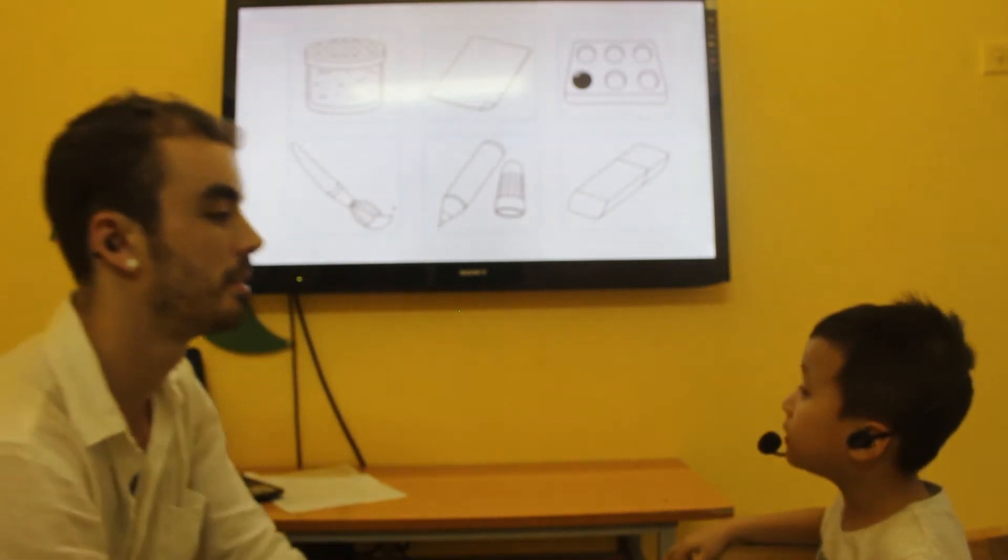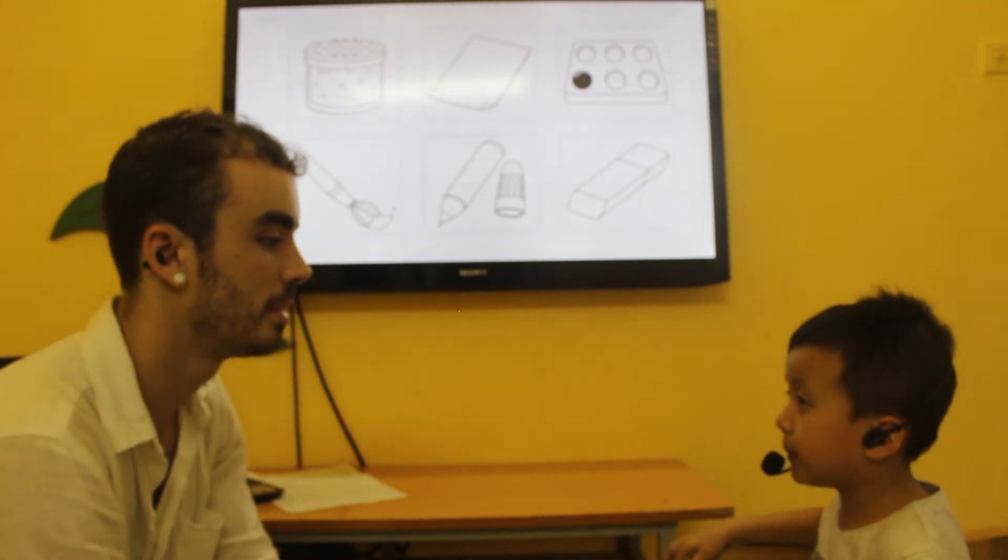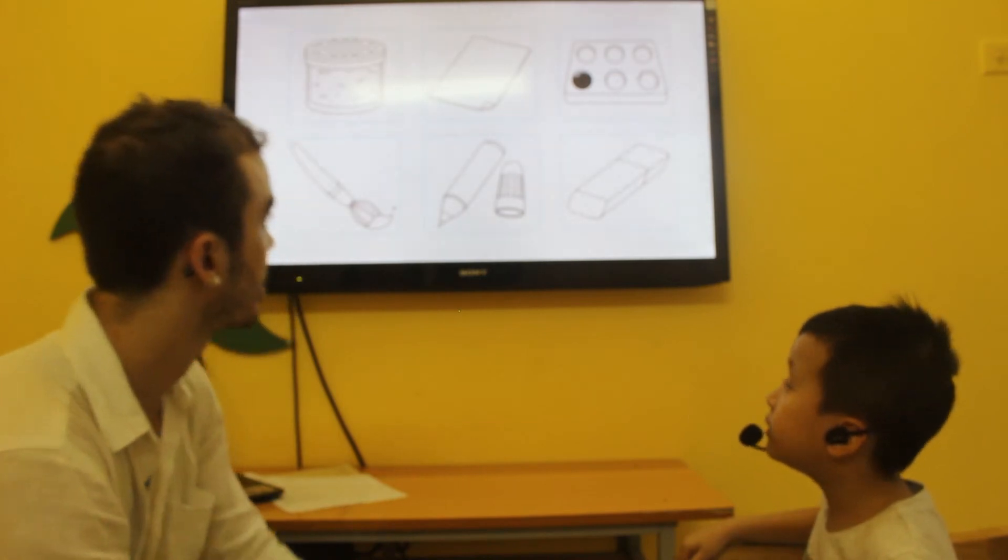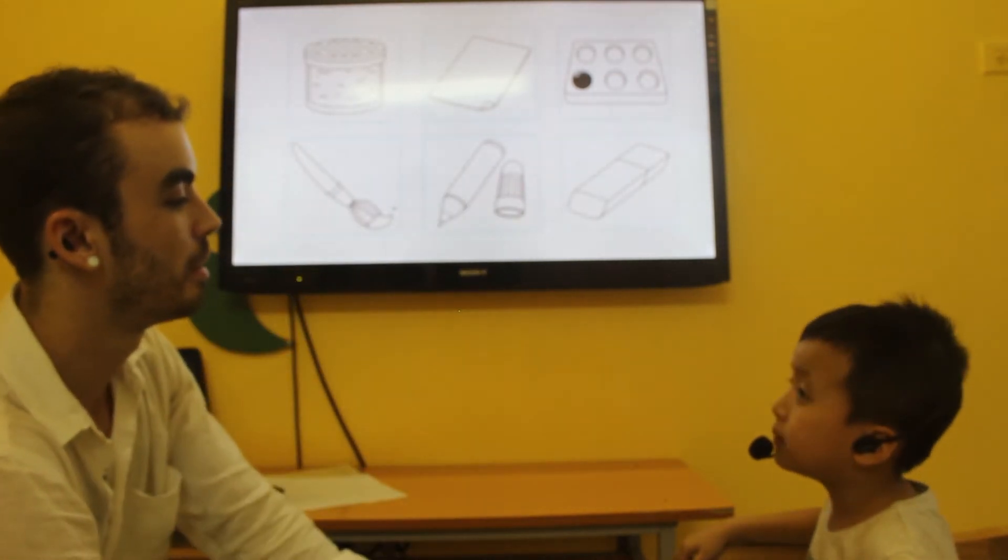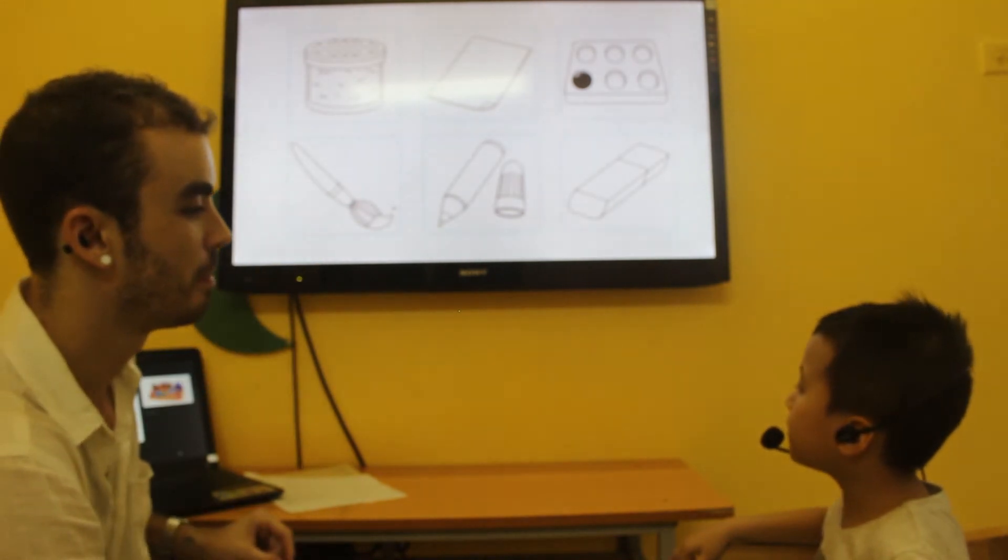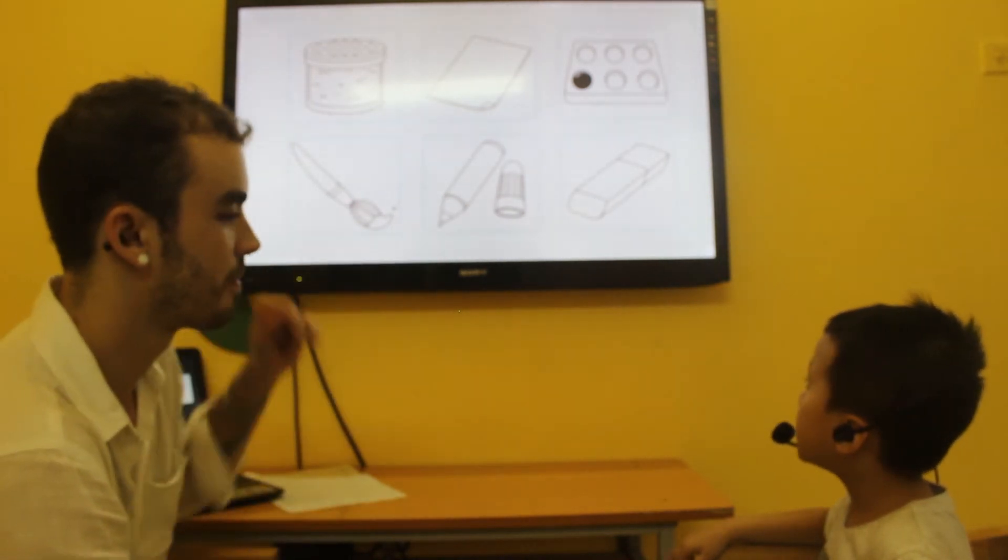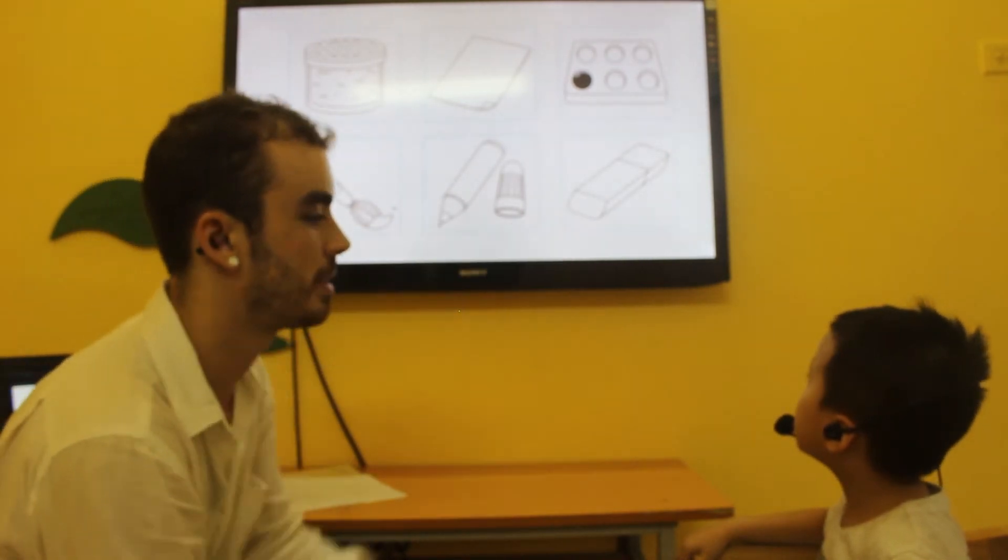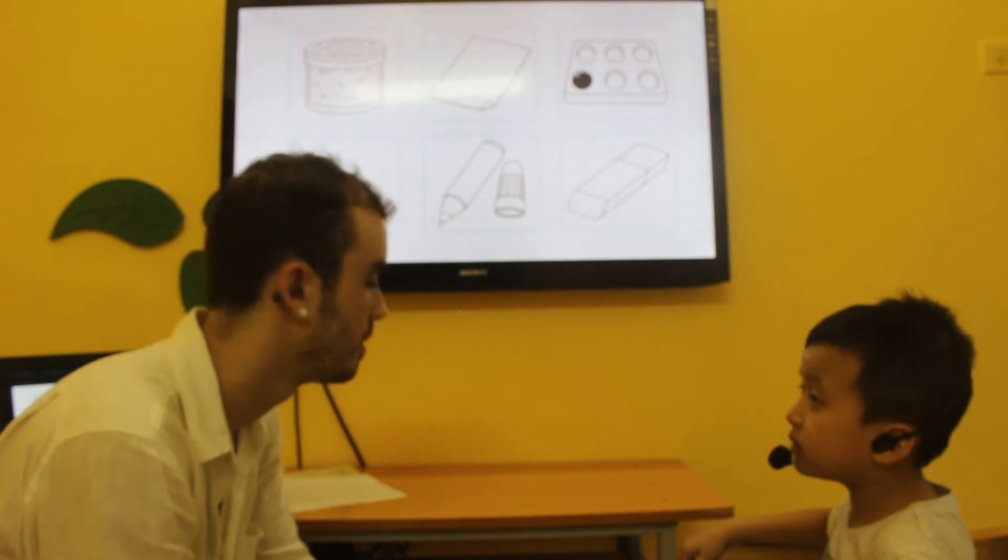What is this? It's a pink. No, it's green. Great. Excellent. What is this? It's a paper. Wonderful. What's this? It's a paint. What is this? It's a paintbrush. Mm-hmm. What's this? It's a marker. Very good. And what is this? It's an eraser. Wonderful.